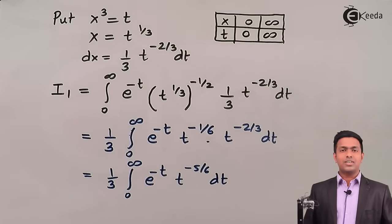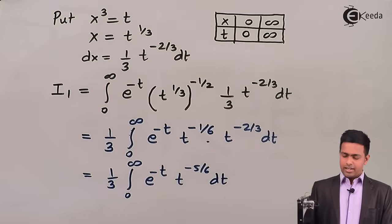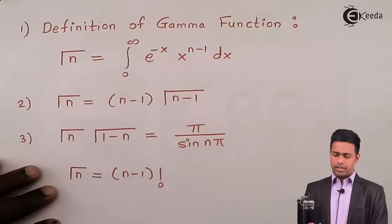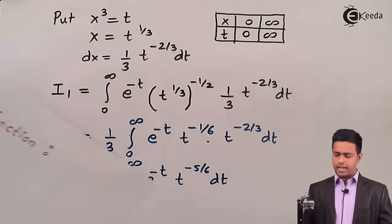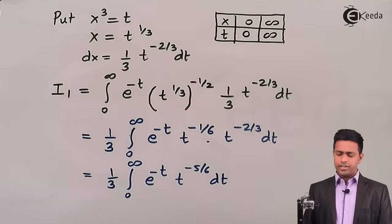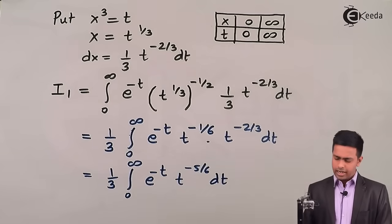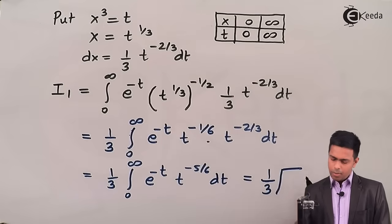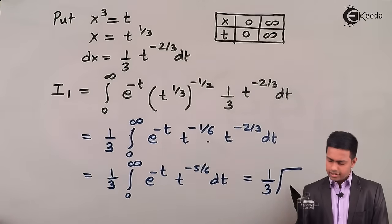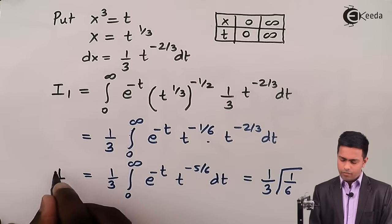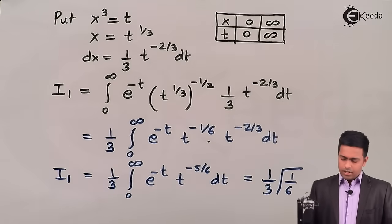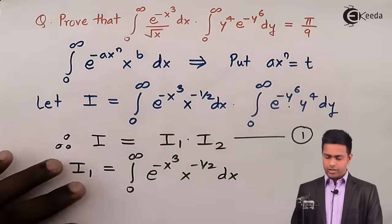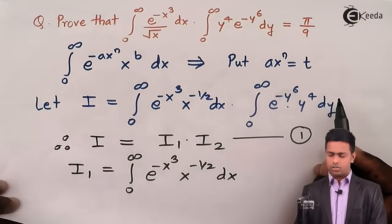This exactly matches the definition of the gamma function. The power of t is −5/6, so we add 1 to get the argument of gamma: −5/6 + 1 = 1/6. Therefore I₁ = (1/3) · Γ(1/6).